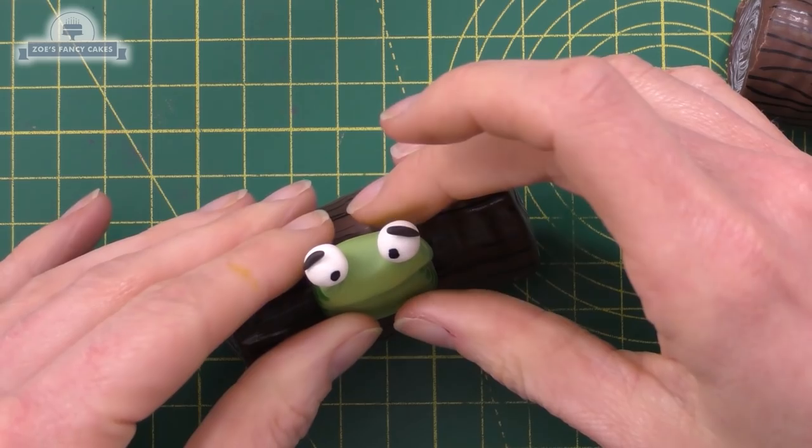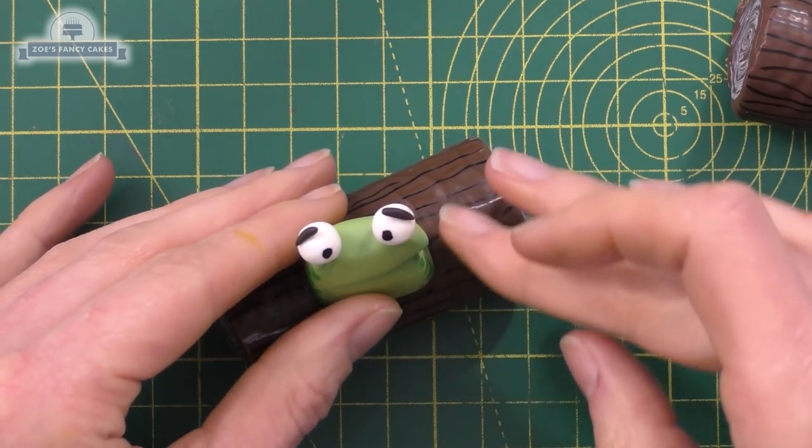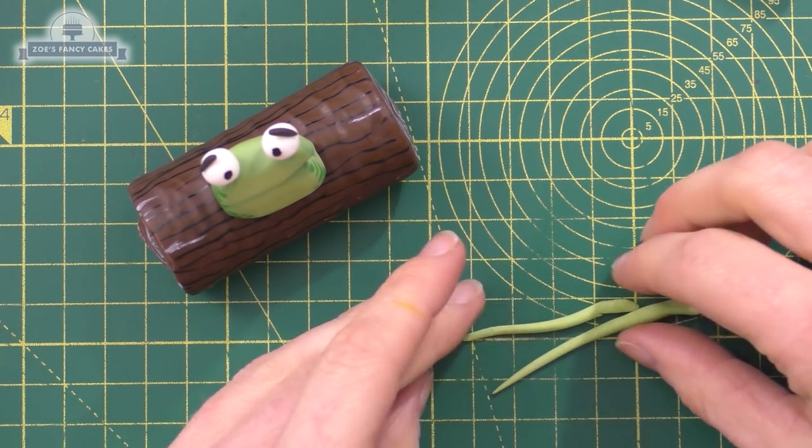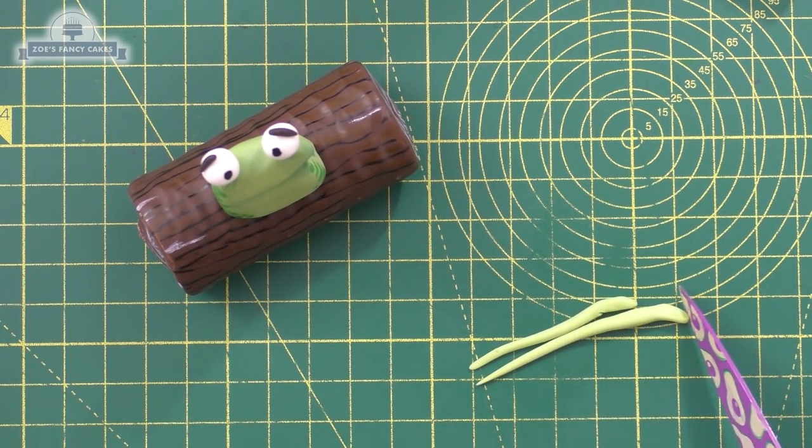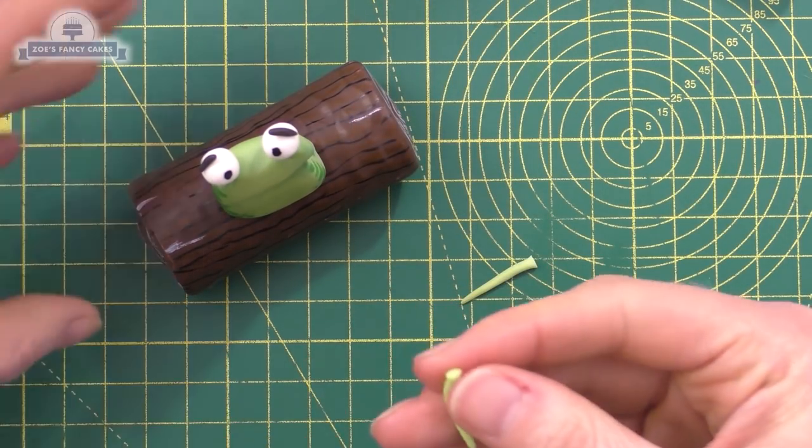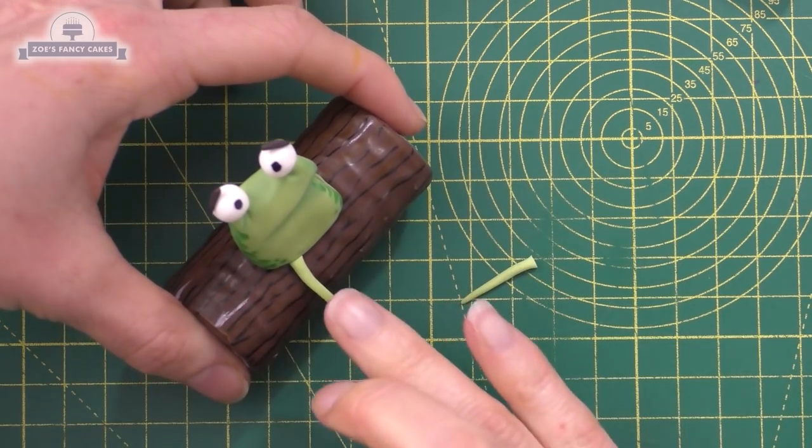Then we're going to stick it to the chocolate log. I've used water - you can use edible glue or a little bit of royal icing. For the legs, we're going to roll some really thin pieces of the leftover green. I'm going to cut them at this point so they're really thin at the bottom.